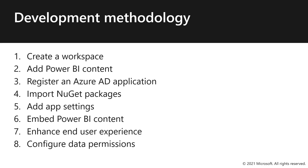Lastly, at stage eight, we will consider data permissions, also known as row-level security, to allow different users to see different data from the datasets. Note that configuring data permissions shouldn't be a last consideration in your project. Security should be factored into your earliest design at planning time.